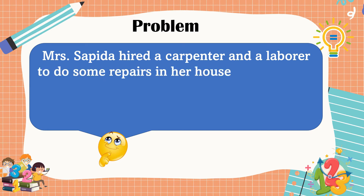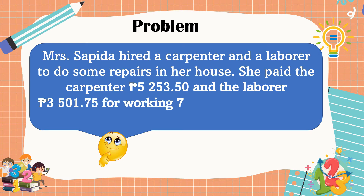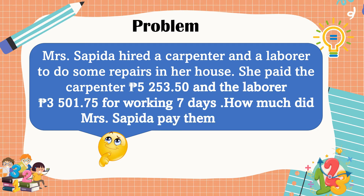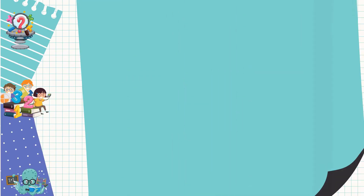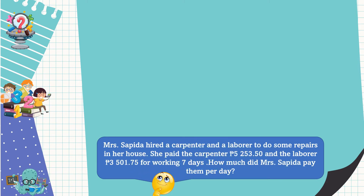She paid the carpenter 5,253 pesos and 50 centavos, and the laborer 3,501 pesos and 75 centavos, for working seven days. How much did Mrs. Sapida pay them per day? Our first problem is a routine problem, so we're going to use the four steps. First, we need to understand the problem.